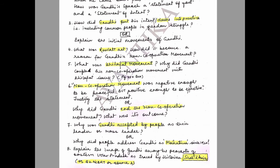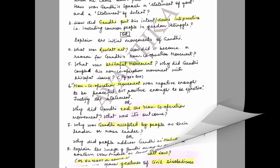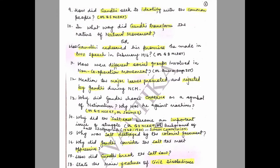Question 8: Explain the image of Gandhi among the peasants of eastern Uttar Pradesh as traced by historian Shahid Amin — or question number 2 in NCRT source 2; all are the same. Question 9: How did Gandhi seek to identify with the common people — or question number 1 in NCRT.